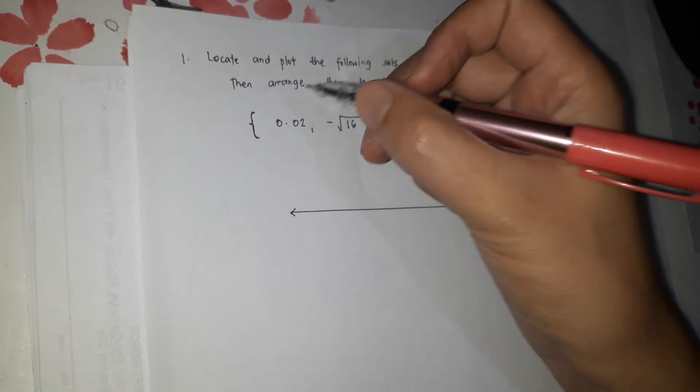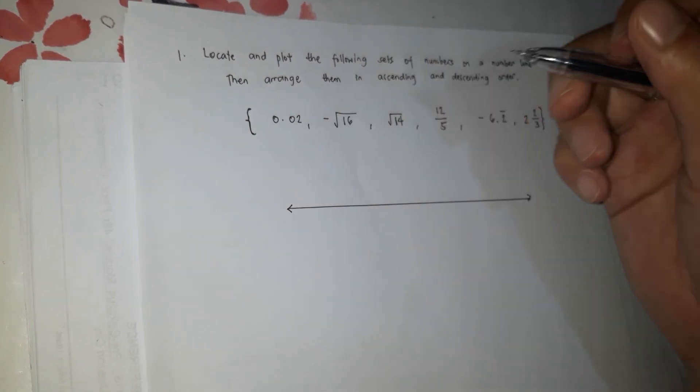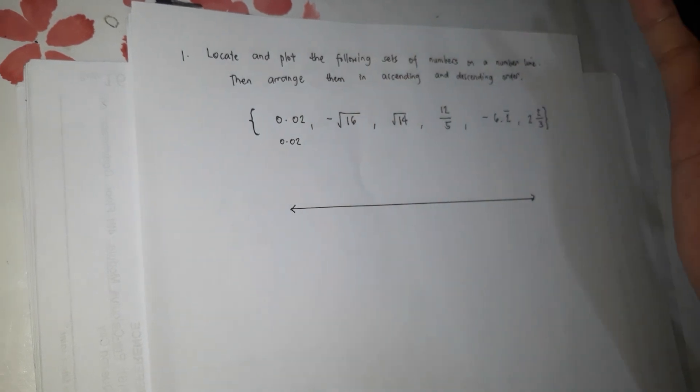These are different real numbers. So we're going to plot them on a number line. It's best, since the numbers are varied, we're going to write them in decimal form — so we can determine which is greater and which is smaller.